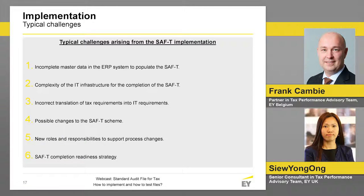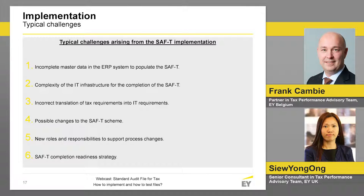Secondly, the complexity of your IT infrastructure. To put it simply: if I have one single SAP system and I want to create the SAF-T file automatically out of one large database, it's not easy but it's feasible. But once your organization is working on multiple ERP platforms — in different versions — you might have multiple legal entities in Poland, all eligible for SAF-T filing. One is on SAP, another on Oracle, another on a local Polish solution. This means you need to set up the creation of your SAF-T file out of three different systems.